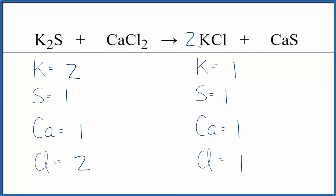We put a coefficient of two in front of the KCl, one times two, that'll give us two of those. So we have two potassium atoms, those are balanced.